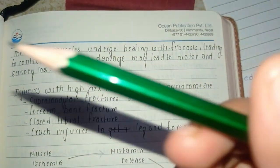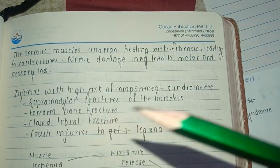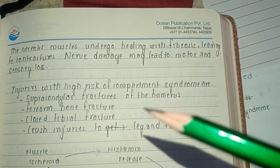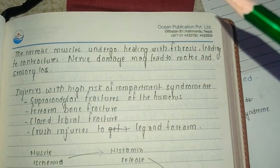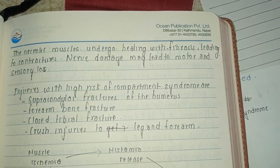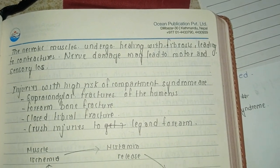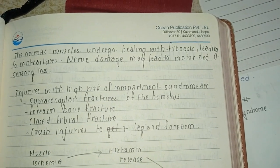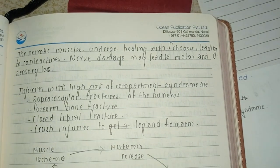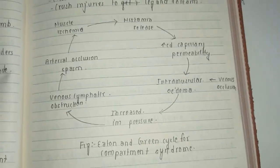The most common fractures which can lead to compartment syndrome are supracondylar fracture of the humerus, forearm bone fracture, closed tibial fracture, crush injuries to the leg and forearm, traumatic swelling of the limb, and in some cases snake bite.